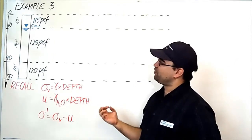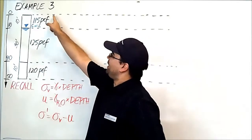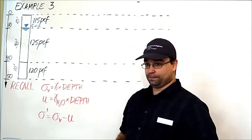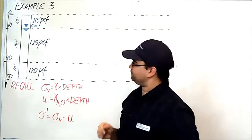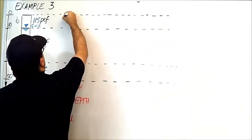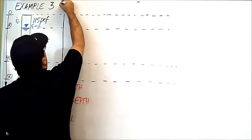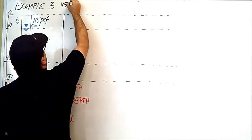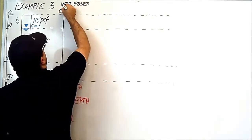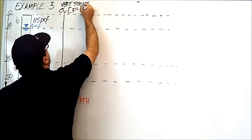Let's see if we can calculate the effective stress at each interface location as well as the bottom of the borehole. I'm going to draw a line and call this the vertical stress, sigma v, with units in pounds per square feet.